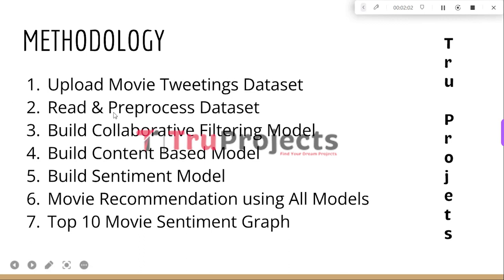The second module is Read and Pre-process the Dataset. In this module, we read and pre-process the Movie Tweeting dataset. The dataset is put into a structured format, and we extract the relevant information needed for building the recommendation system. This includes Movie Title, User Ratings, and other relevant attributes.